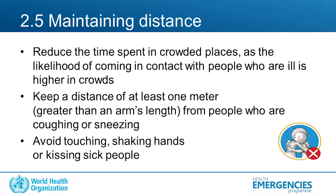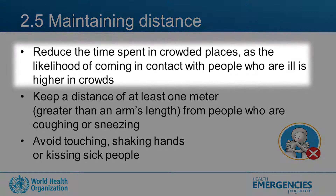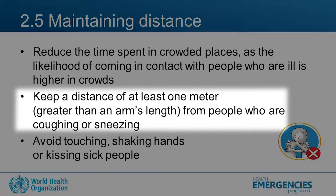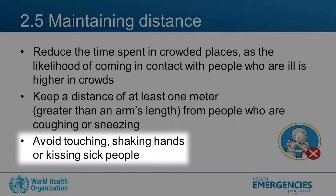Another way to prevent respiratory disease is to reduce the time spent in crowded places, as the likelihood of coming in contact with people who are ill is higher in crowds. Also, keep a distance of at least one meter — greater than the length of your arm — from people who are coughing or sneezing. And finally, avoid touching, shaking hands, or kissing sick people.